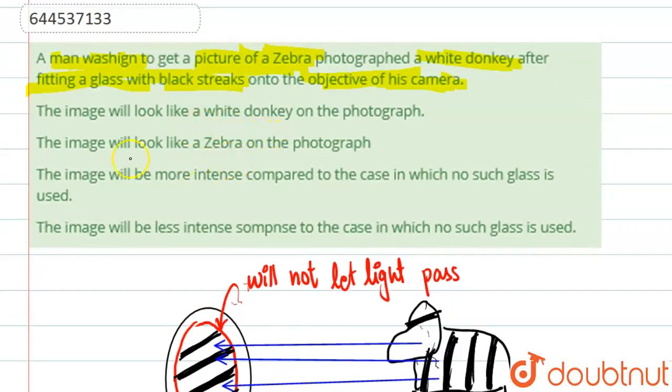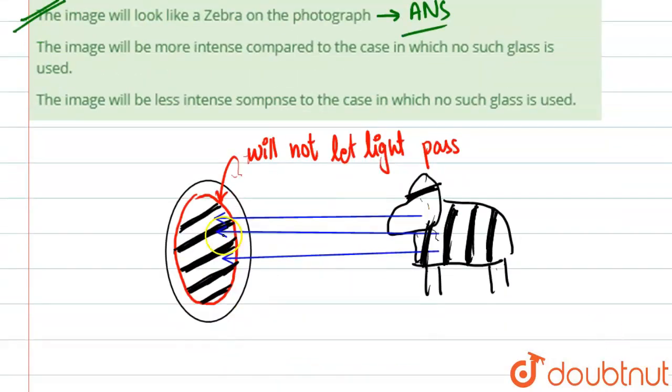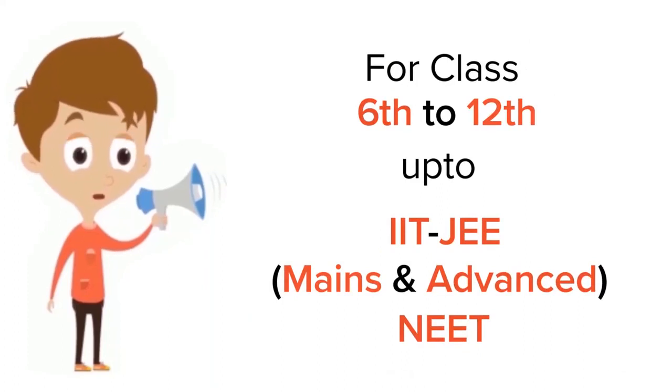So basically the image of the white donkey, the image will look like a zebra on the photograph. This is basically our answer. Why? Because this acts simple to a photo filter. You can understand it as a photo filter because it doesn't let light pass through it from these gaps.